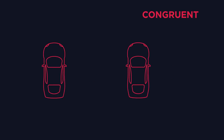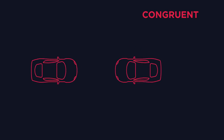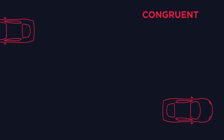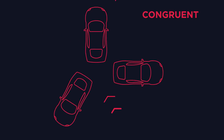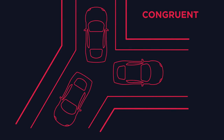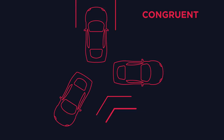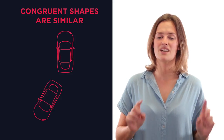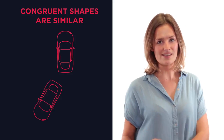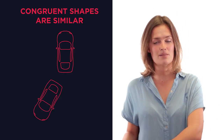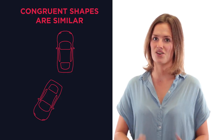Congruent shapes, however, must be the exact same size. They can only be rotated, reflected, or moved. Think congruent cars — these cars are all identical but just at different points on a junction. So congruent shapes are also similar, but similar shapes aren't necessarily congruent.